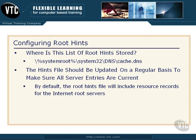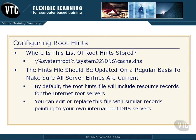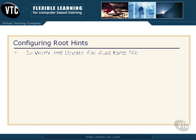By default, the root hints file will include resource records for the internet root servers. However, you can edit or even replace this file with similar records to point to your own internal root DNS servers, so you don't have to jump out to the internet root servers every time your DNS server comes up empty-handed. You can edit that root hints file and have it point to somewhere within your own network.